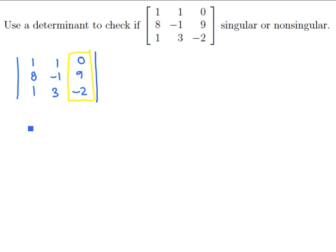This determinant would involve a 0 times a submatrix, a 9 times a submatrix, and a negative 2 times a submatrix. The submatrix for the 0, we don't care about.